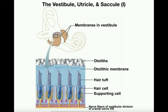The utricle and saccule are termed otolithic organs, meaning they have an otolithic membrane. There's a layer of tissue containing hair cells, very similar to those in the cochlea. Attached to these hair cells are hair tufts — kind of like cilia — sitting out of the hair cell. On the other side of the hair cell we have neurons that project toward the vestibular nerve, which is the vestibular division of the vestibulocochlear nerve, or cranial nerve 8. On one side we have axons projecting toward the vestibular nerve; on the other side we have cilia. These cilia are embedded in the otolithic membrane.